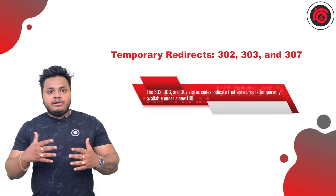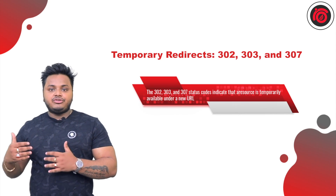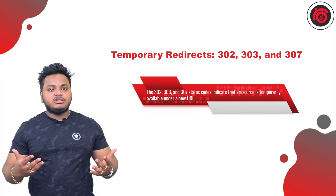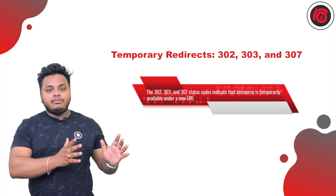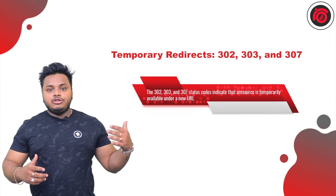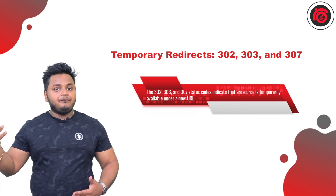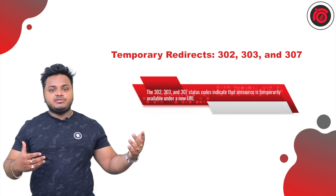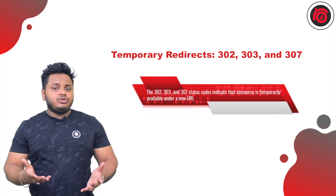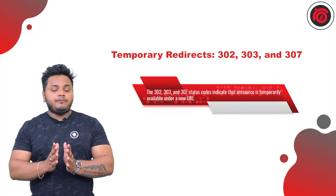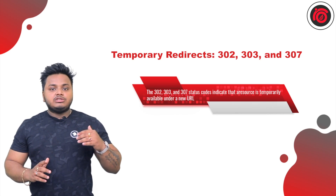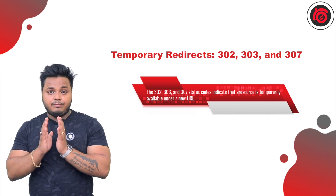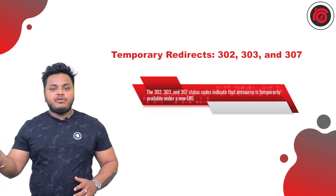Now let us discuss the temporary redirects: 302, 303, and 307. Even though 302 and 307 both serve the purpose of temporary redirection from an SEO perspective, 303 and 307 can have different behaviors regarding request handling, as shown on screen. We will focus on 302 from the temporary redirects because it is most relevant to SEO. A 302 means you are not passing any SEO benefit or link juice to the newly modified URL structure.